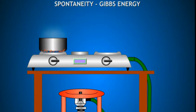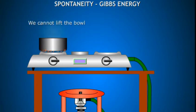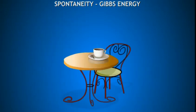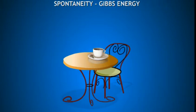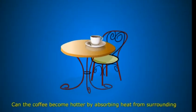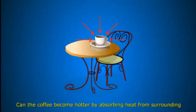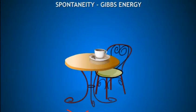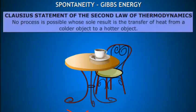Consider a bowl of water kept on a gas burner. We heat the bowl such that some heat energy is transferred into it, but we cannot lift the bowl however much energy we transfer. Also think of a cup of hot coffee kept on a table — can this coffee get even hotter by absorbing heat from the surroundings? The answer is no, although there is no such restriction mentioned in the first law. The fact that heat cannot flow from a cold region to a hot region spontaneously is the closest statement of the second law of thermodynamics.